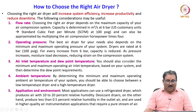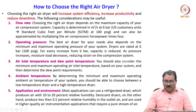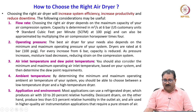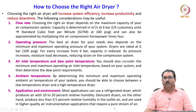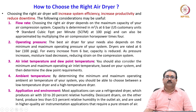Another important parameter is the application and environment where the dryers are used. Most applications can use a refrigerated dryer, which produces air with 10 to 20 percent relative humidity. Desiccant dryers, on the other hand, produce less than 0.5 percent relative humidity in the outlet air and are used in high-quality air instrumentation applications that require a pure stream of air. These are the parameters to consider while selecting the right air dryer for your application.